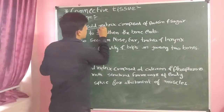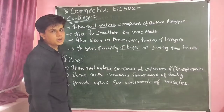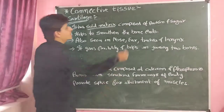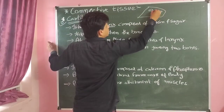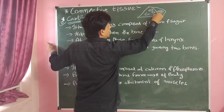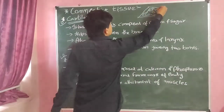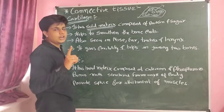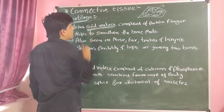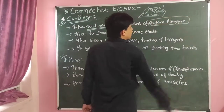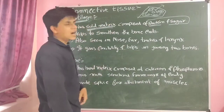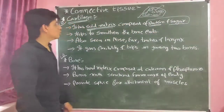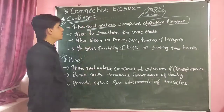Cartilage has a solid matrix — that is, intercellular matrix. Remember that solid and hard are different. The solid matrix of cartilage is composed of protein and sugar molecules. This question may be asked in exams: cartilage matrix is composed of protein and sugar, so here we have solid matrix present.